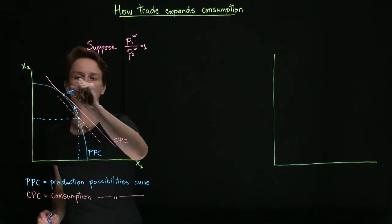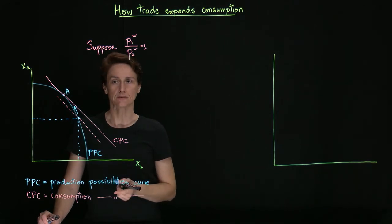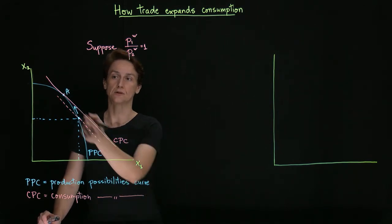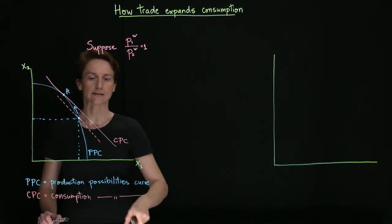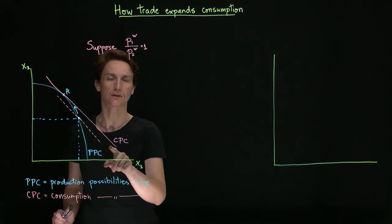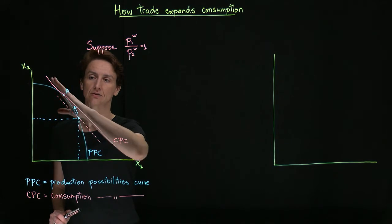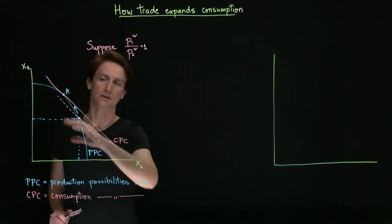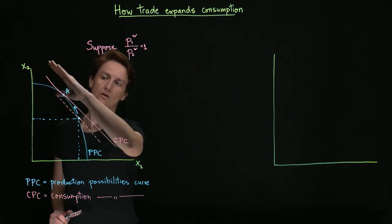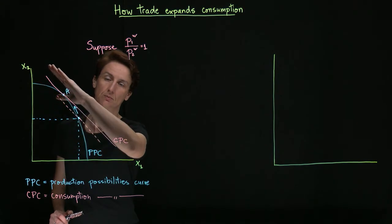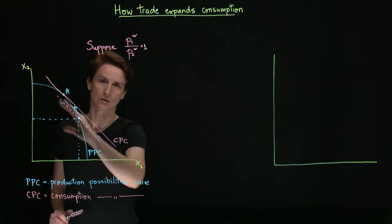So now this will be point A. That indicates how much the country produces. In terms of consumption, however, that can be chosen anywhere along CPC. So CPC is a line that has slope equal to the ratio of prices internationally and that has to make contact with production possibilities curve. But it will do so so that it includes the most possible bundles, so that it's as far as possible from the origin, which means that we will find it at the tangency point.